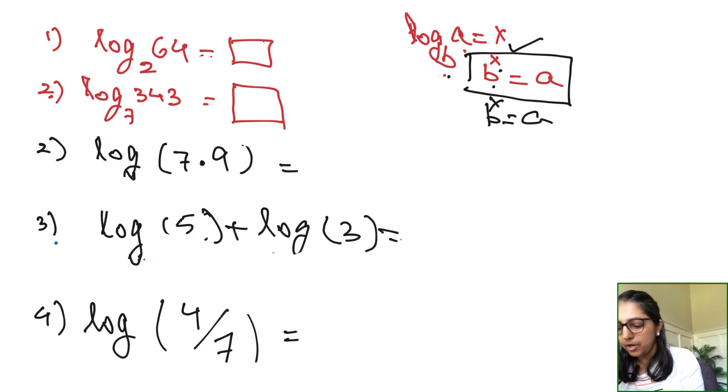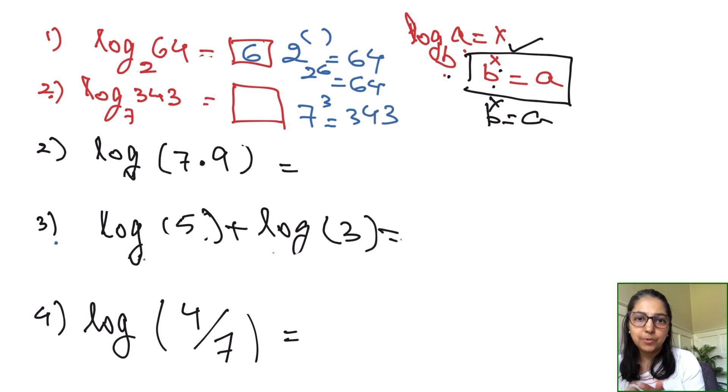I put questions on one and two so we can review. If it's log base 2 of 64, the question is asking what power should the base number be raised to so we get 64. I know this will be 6 because 2^6 gives us 64. Same way, what power will 7 be raised to to give us 343? That's going to be 7^3 which is 343, so the answer is 3.